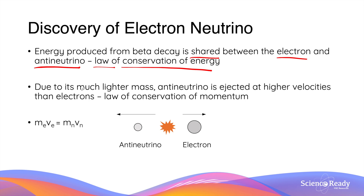Due to the anti-neutrino's much lighter mass, it is often ejected at a higher velocity compared to the electron, as required by conservation of momentum. Since the momentum magnitudes must be equal, if the neutrino's mass is much smaller than the electron's, its velocity must be much higher. Since kinetic energy depends on the square of velocity, the anti-neutrino often has much higher kinetic energy than the electron.